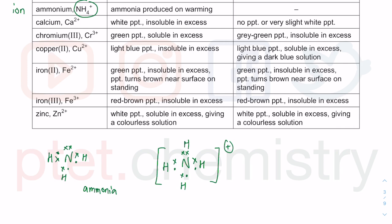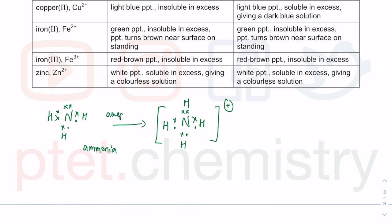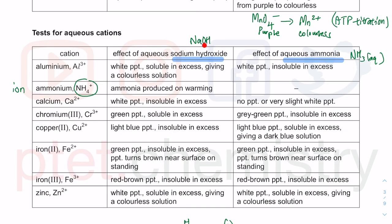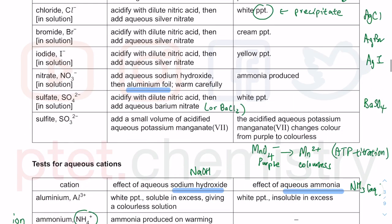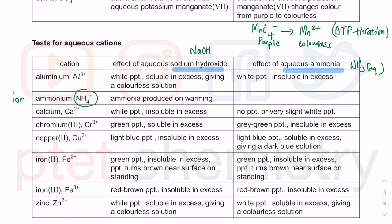Ammonium accepts H⁺ because it acts as a base or alkali. Ammonia is produced on warming with NaOH without aluminium foil, whereas the nitrate test requires aluminium foil. Chromium(III), copper(II), iron(II), and iron(III) form colored precipitates from colored solutions — a characteristic of transition metal compounds. Adding NaOH precipitates out the hydroxide of each cation.